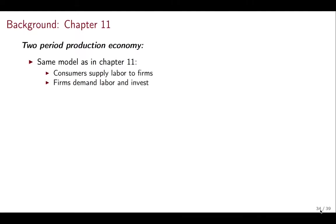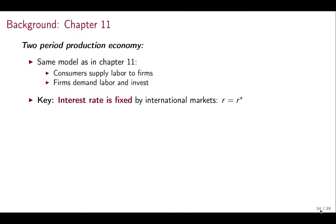The background for this is going to be the two-period production economy of Chapter 11. This is going to be a model where consumers supply labor to firms in addition to making their consumption and saving choices. Firms are going to demand labor and are going to invest in capital for the second period, so production is going to take capital and labor. The key difference between this model and the one in Chapter 11 is that the interest rate is fixed by international markets — the interest rate R is going to be given by the international interest rate R-star.